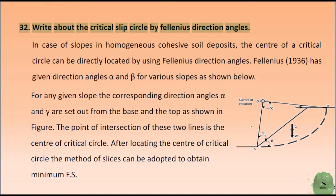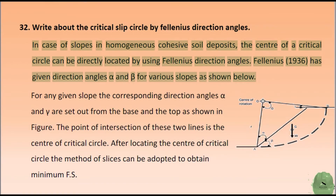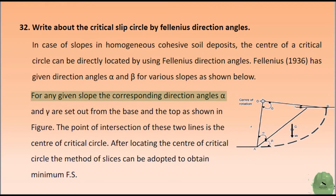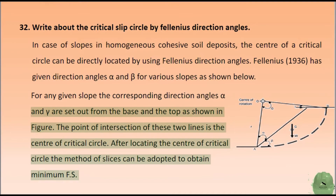Write about the critical slip circle by Fellenius direction angles. In case of slopes in homogeneous cohesive soil deposits, the center of a critical circle can be directly located by using Fellenius direction angles. Fellenius (1936) has given direction angles α and β for various slopes. For any given slope the corresponding direction angles are set out from the base and the top as shown in the figure. The point of intersection of these two lines is the center of the critical circle. After locating the center of the critical circle, the method of slices can be adopted to obtain minimum Fs.